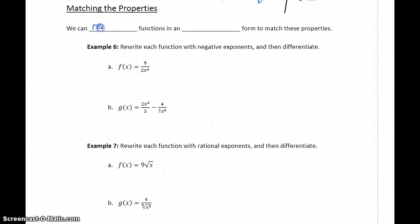What we can look at doing is taking a given function and rewriting it in an equivalent form in order to match the properties that we've established so far. In example 6, we want to take each of the functions below and rewrite it with negative exponents, so then it will match one of the properties that we've already established.